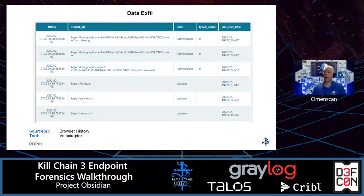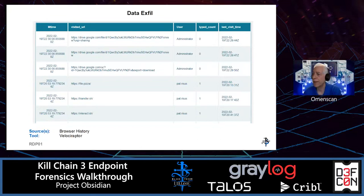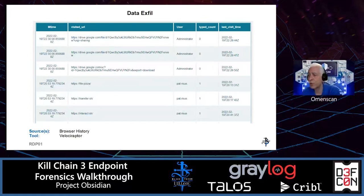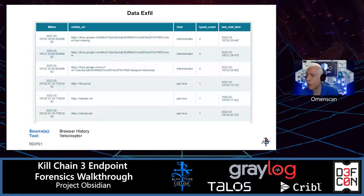Looking further at browser history, we collected browser history using Velociraptor, converted it to a CSV file, and then put that CSV file into a reporting mechanism called ACH report. Using this, we see that this machine reached out to file.pizza and transfer.sh, indicating that the actor wanted to take data from the machine and exfiltrate it out.